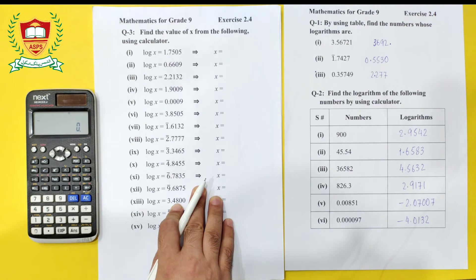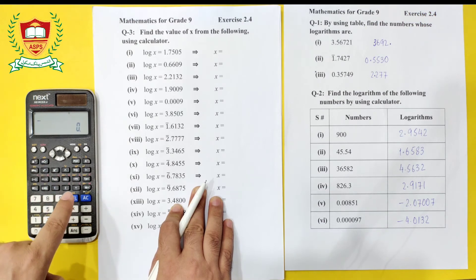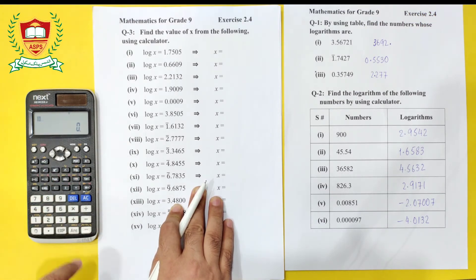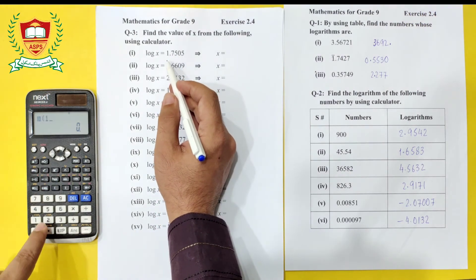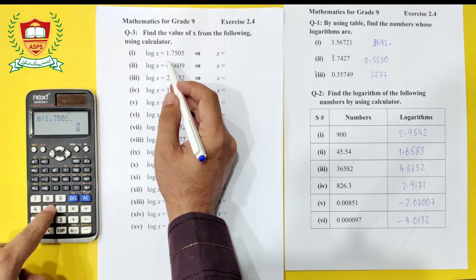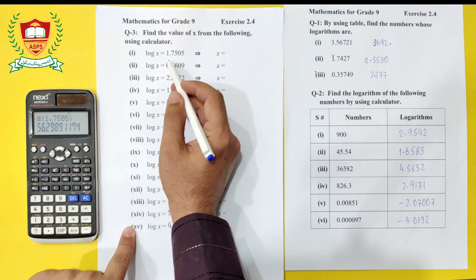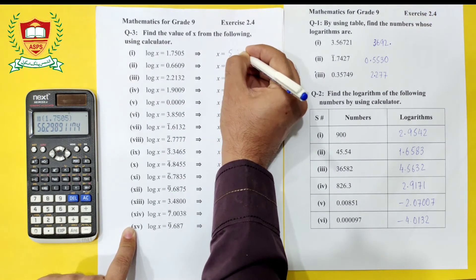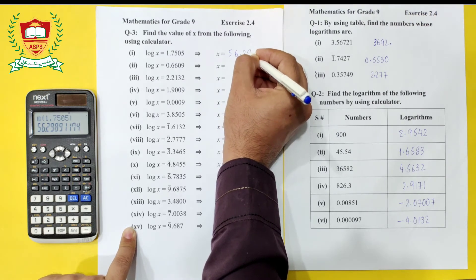To find anti-log on the calculator: first press the Shift button, then press the log button (which now acts as anti-log). Open a bracket, enter 1.7505, close the bracket, and press equals. The answer obtained is 56.2989.